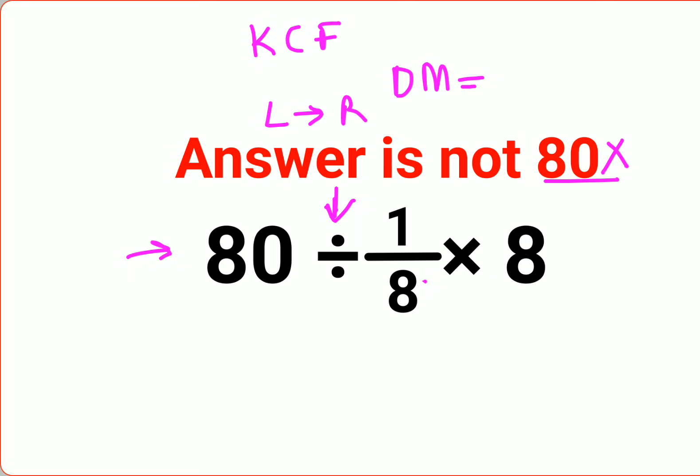So here what you should do is apply the rule of KCF. What does that mean? K stands for keeping the first number as it is, C stands for changing the division sign to multiplication, and F stands for flipping or taking the reciprocal.